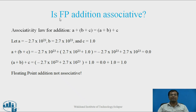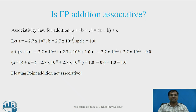Is floating point addition associative? To answer this question, we will see the associative law. According to this law, for addition it should hold that a plus (b plus c) is equal to (a plus b) plus c. If these two values are matching, then we say it is associative. Let us consider a is equal to minus 2.7 into 10 to the power 23, b is equal to 2.7 into 10 to the power 23, and c is equal to 1.0.